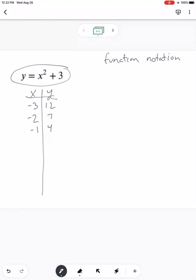You could put negative 1 and get 4. 0 gives you 3. 1 gives you 4. 2 gives you 7. And 3 gives you 12. And now these, of course, are a series of coordinates. You could graph those coordinates and then you would see the pattern.